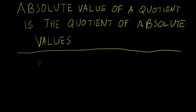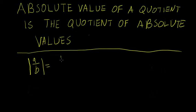In this video, we're going to be showing that the absolute value of a quotient is equivalent to the quotient of the absolute values. So we'll be showing that the absolute value of A over B is equivalent to the absolute value of A over the absolute value of B.